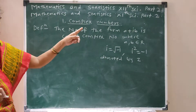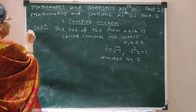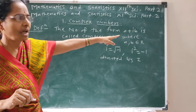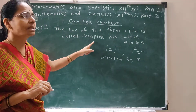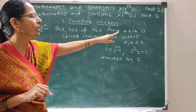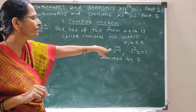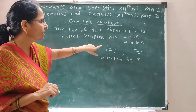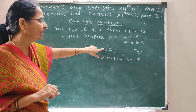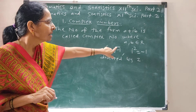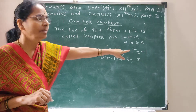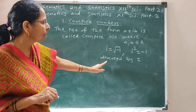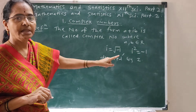Complex Numbers — Definition. A number of the form A plus iB is called a Complex Number, where A, B belong to R. The value of i is root of minus 1. If we take its square, i squared — the square and root get cancelled — giving minus 1. This Complex Number is denoted by Z.